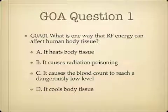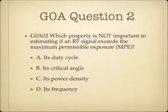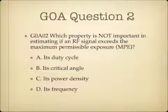Question 1. What is one way that RF energy can affect human body tissue? A, it heats body tissue; B, it causes radiation poisoning; C, it causes the blood count to reach a dangerously low level; or D, it cools body tissue. Question 2. Which property is not important in estimating if an RF signal exceeds the maximum permissible exposure or MPE? A, its duty cycle; B, its critical angle; C, its power density; or D, its frequency?